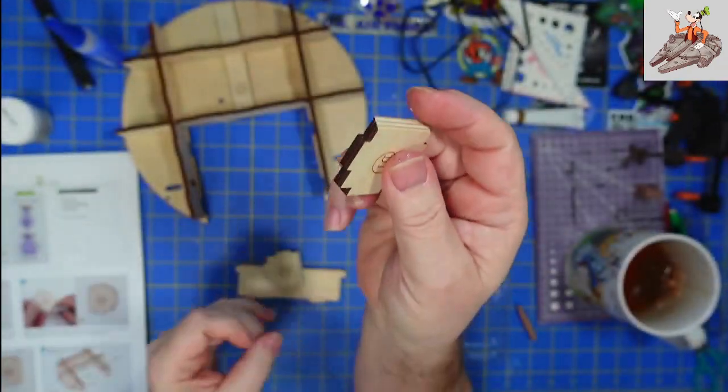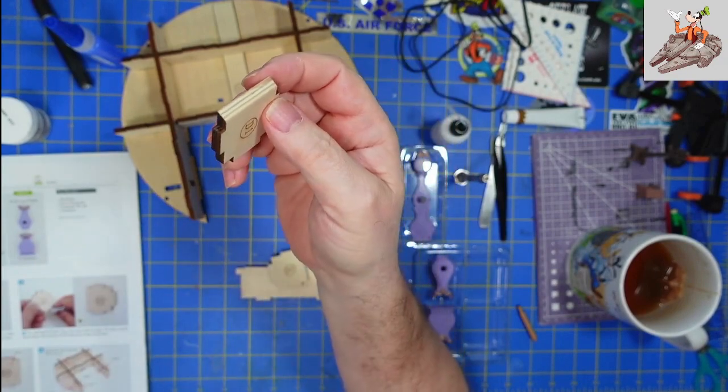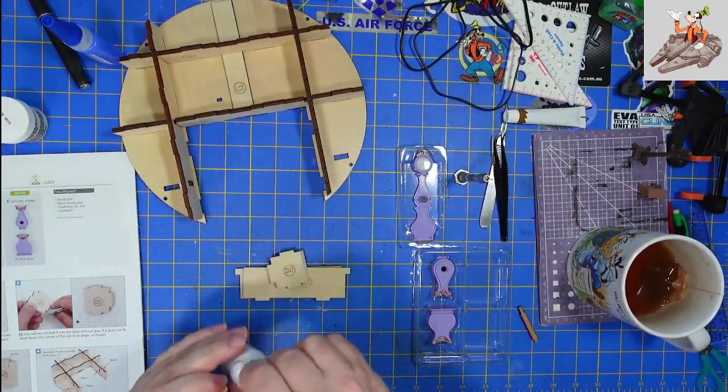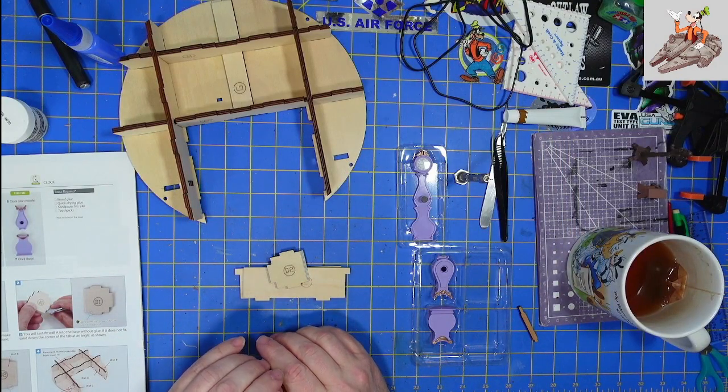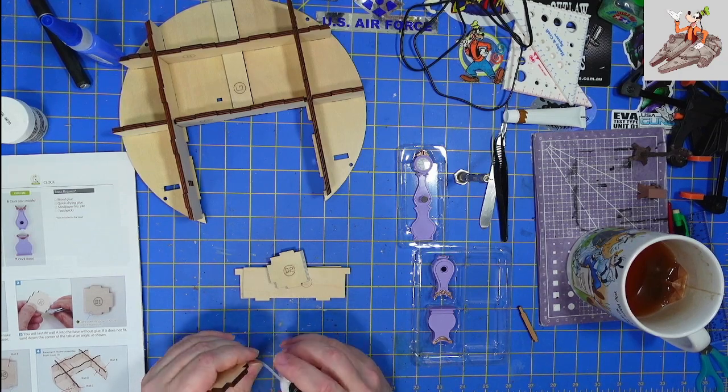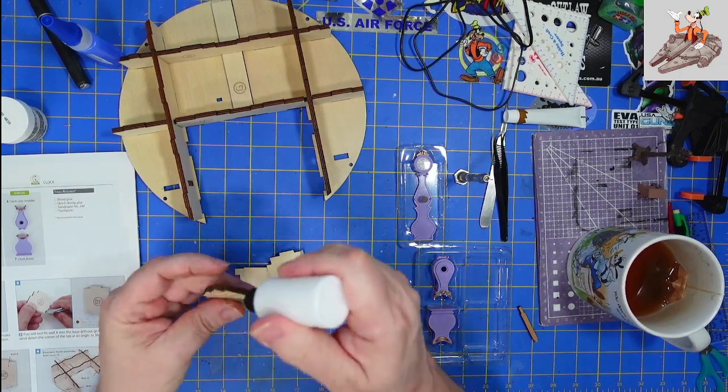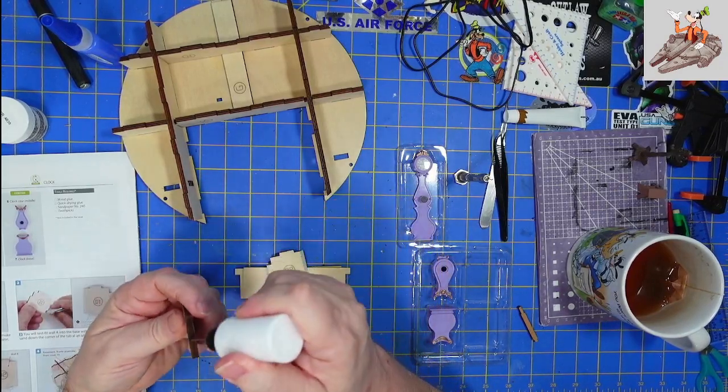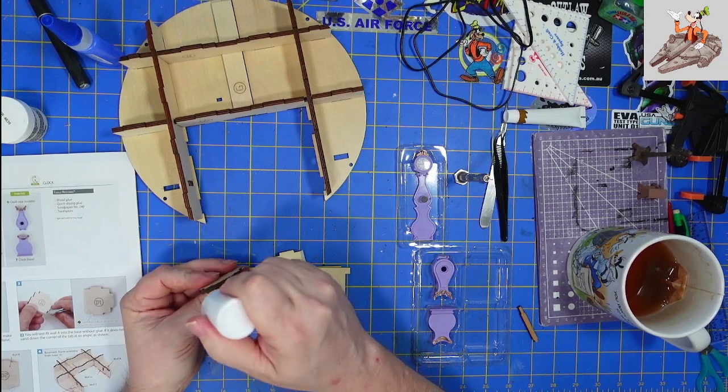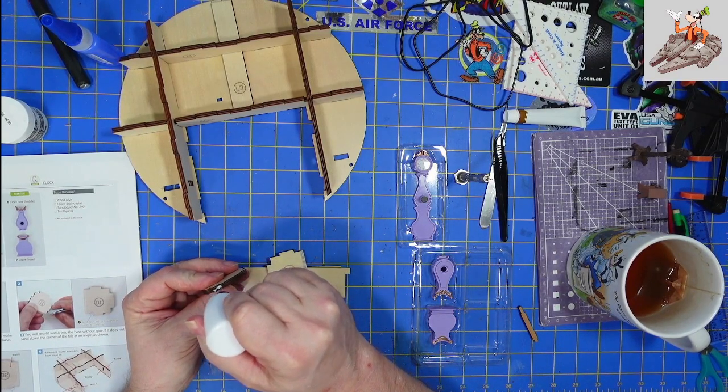That's why they're saying to lightly sand that corner because this corner could be in the way. But I can actually push it in there and get it to pop into place. So I'm going to go ahead and put glue on the two edges that it requires.